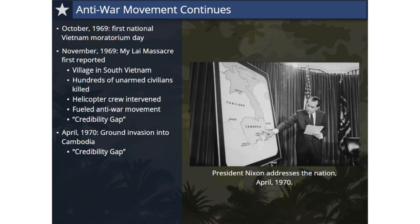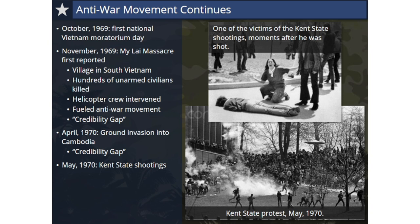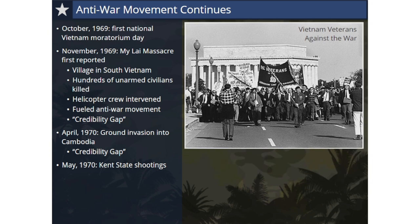Protests over the war's expansion rose up across the country, including at Kent State University in Ohio. At the protest, National Guardsmen opened fire on rock-throwing demonstrators, killing four student bystanders and injuring nine. Vietnam Veterans Against the War, formed in 1967, organized and voiced growing opposition to the war among returning servicemen and women. In April 1971, during a week of protest events, thousands of VVAW members marched on Washington, D.C., some even throwing their war medals onto the steps of the Capitol building, calling them medals for murder.